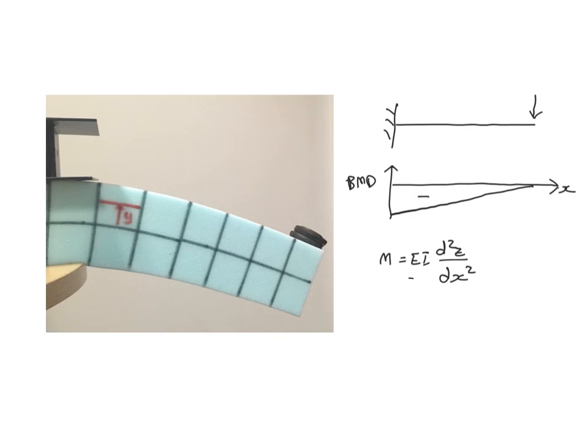Whereas in this region near the tip of the cantilever, under the point load where the bending moment is small, the beam is pretty much straight still, so the curvature is small.